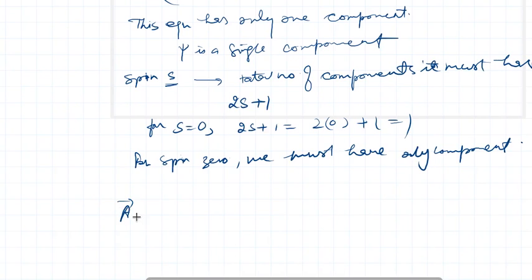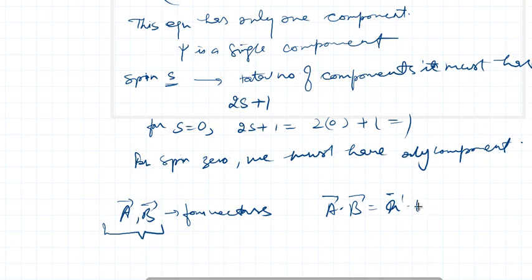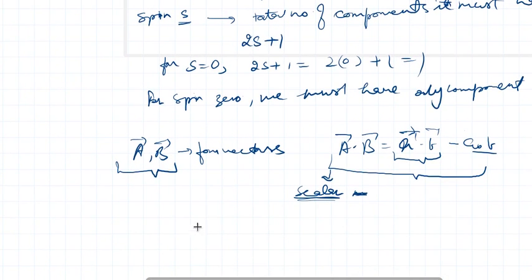Also, if a and b are two vectors and they are four-vectors, then a·b can be written as a·b with spatial components and time components. It's a dot product of two four-vectors, and it is always a scalar. So if it is a scalar, that means it is an invariant quantity.